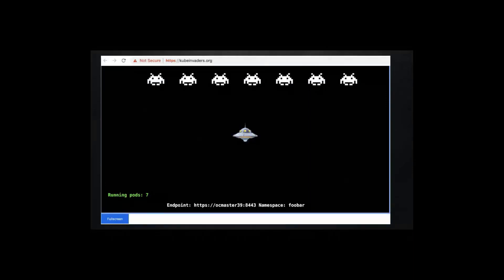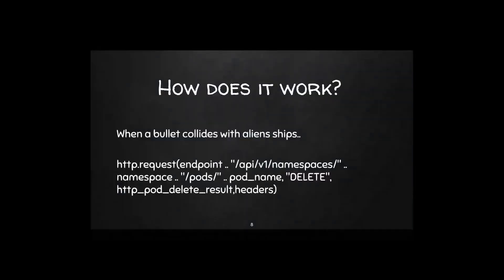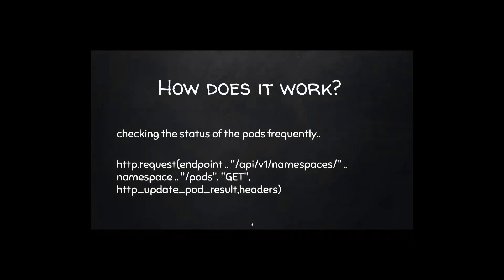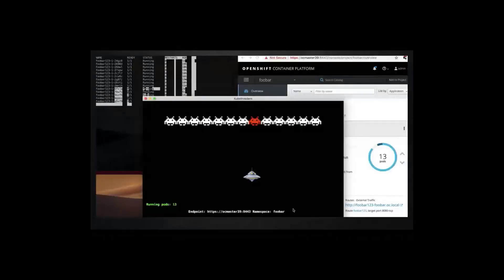This is KubeInvaders — here's an example of it exposed as a web application. How does it work? It's simple for now, though I'd like to extend the functionality. When a bullet collides with an alien ship, I call the endpoint to delete that pod. I also frequently check the status of pods in the target namespace. You can see in the background a terminal running 'oc get pods' and the web console — when a pod is not running, it turns red.